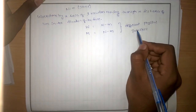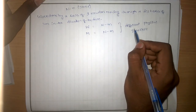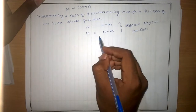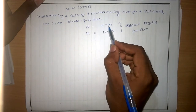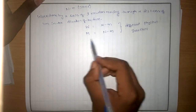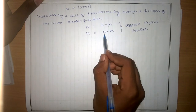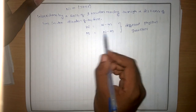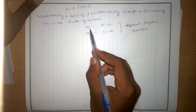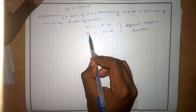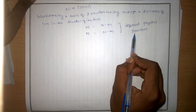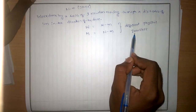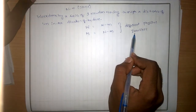Both work and moment have the same dimensions — Newton meter. But they are different physical quantities. We should know the difference between them before starting the problem.